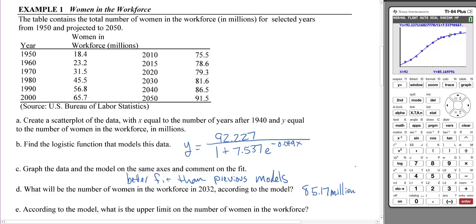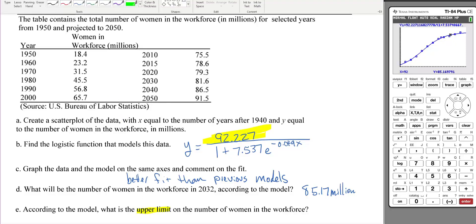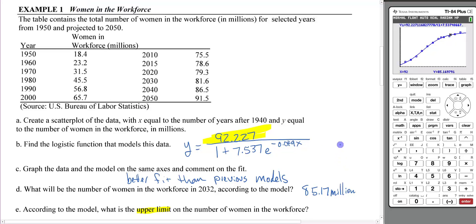According to this model, what's the upper limit on the number of women in the workforce? That's the numerator, the value of c in the function, which is a horizontal asymptote for the model. We have 92.227 million women. After a while this model will have to be redone. It's definitely not going to cap out at that many million women, so the model is no longer valid and you recalculate a new model.